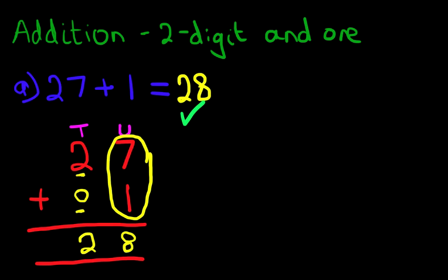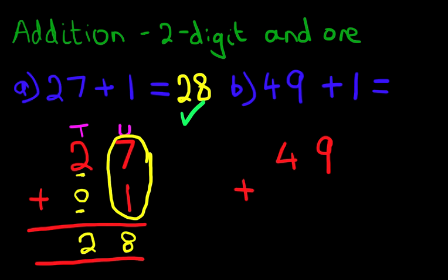Now let's look at a slightly tricky example. What is 49 plus 1? The first thing is to write this down in the vertical format, in columns. We've got 49 plus 1 — put an equal sign. We're going to label the columns again: we've got the units and the tens column.